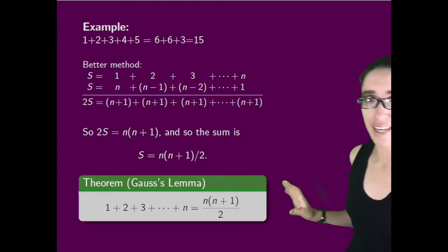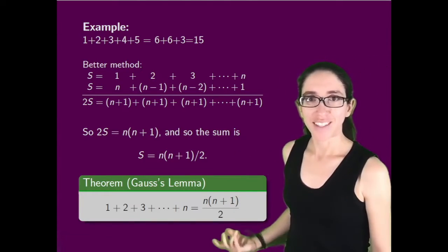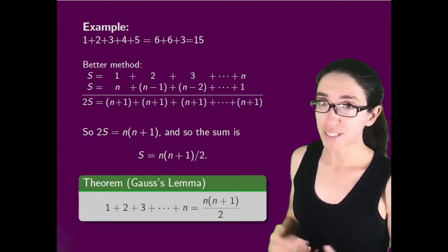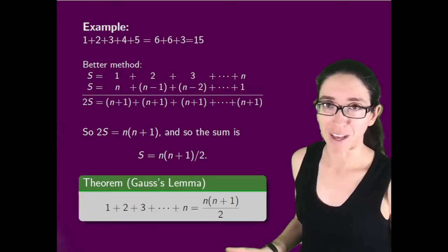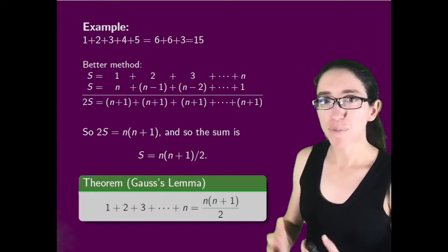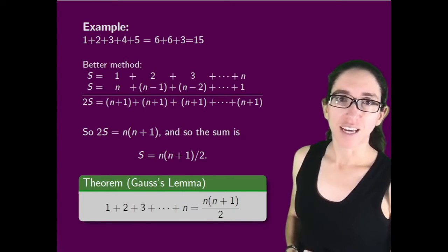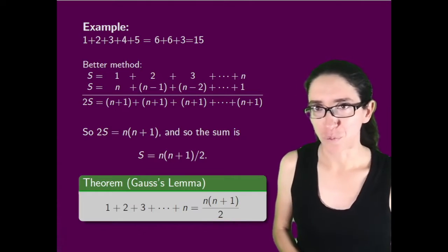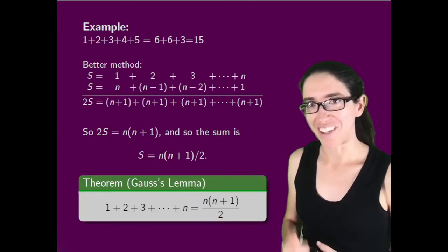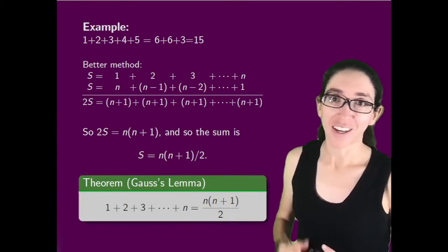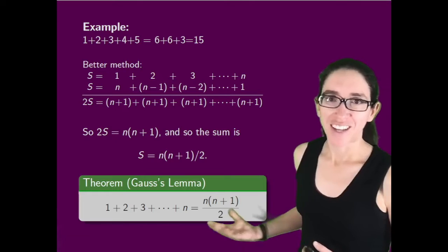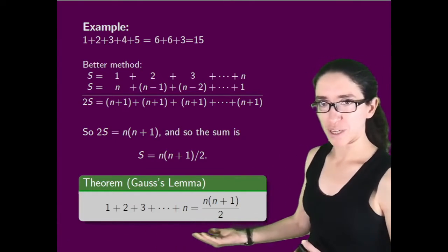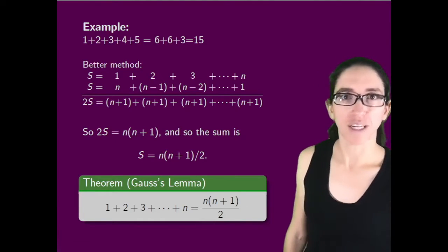This formula is so famous it has a name: Gauss's Lemma. When Gauss was in elementary school, his teacher gave him busy work and said add up all the numbers from one to a hundred. Gauss looked at it and said, one plus a hundred is a hundred and one, two plus ninety-nine is a hundred and one, and so on. He figured out the answer very quickly, much faster than the teacher expected. From then on it became known as Gauss's formula: the sum of the numbers from one up to n is n(n+1)/2.